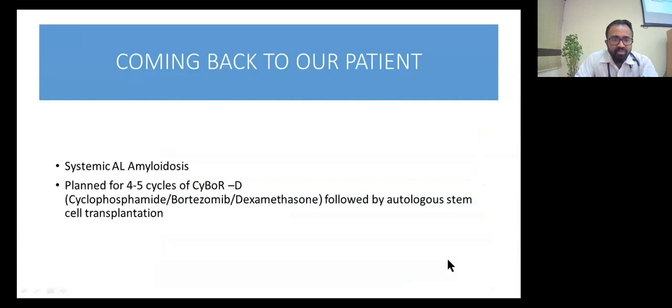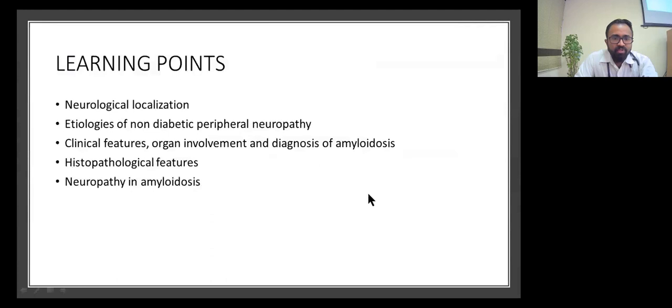Coming back to our patient, she was diagnosed with systemic AL amyloidosis. She's planned for four to five cycles of CyBorD—cyclophosphamide, bortezomib, dexamethasone—followed by autologous stem cell transplantation under hematology. The learning points would be neurological localization, etiologies of non-diabetic peripheral neuropathy, organ involvement, clinical features and diagnosis of amyloid, the characteristic histopathological features, and how typically neuropathy in amyloid presents.